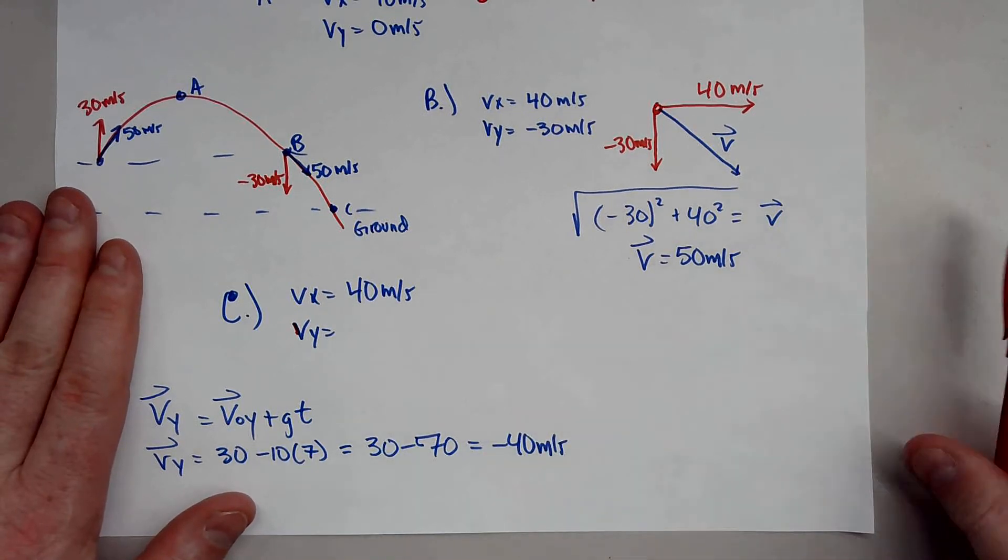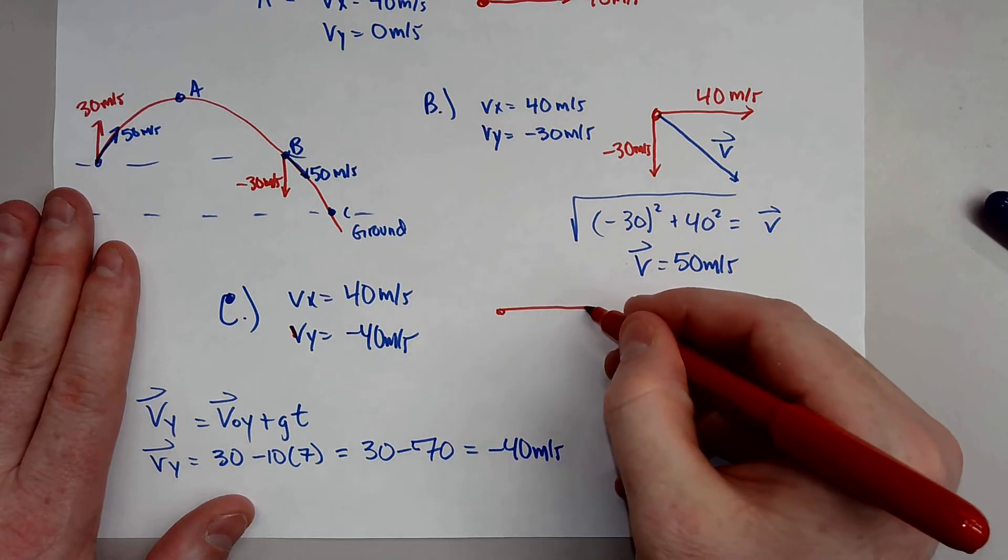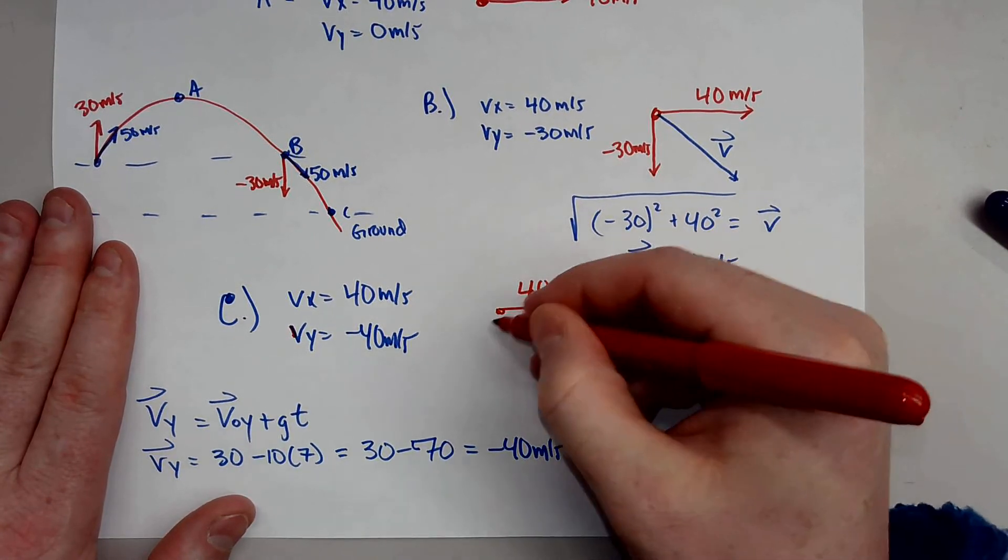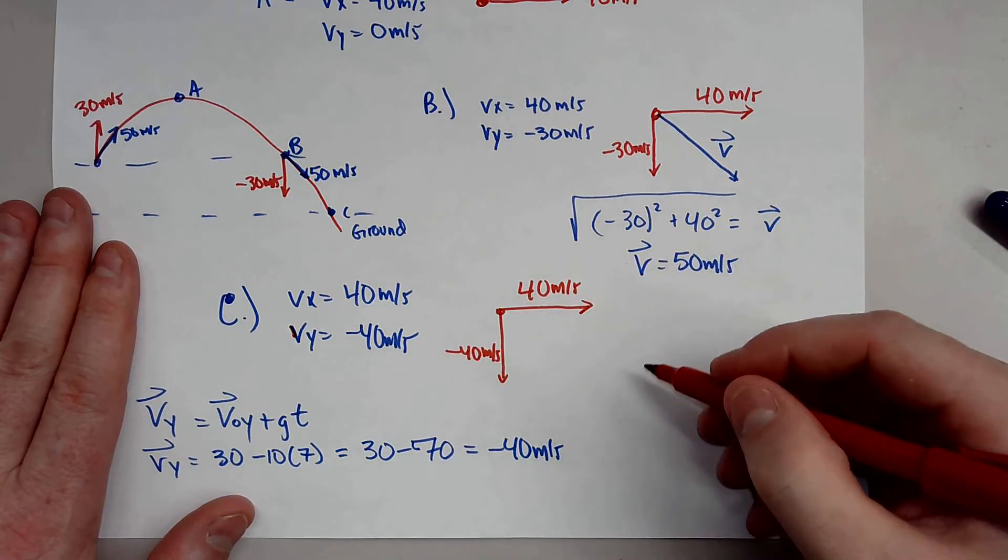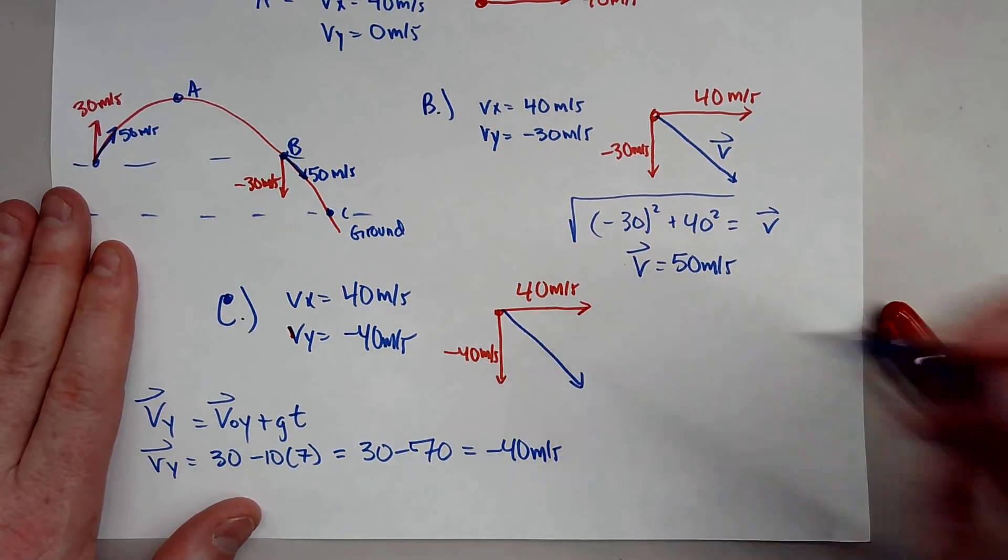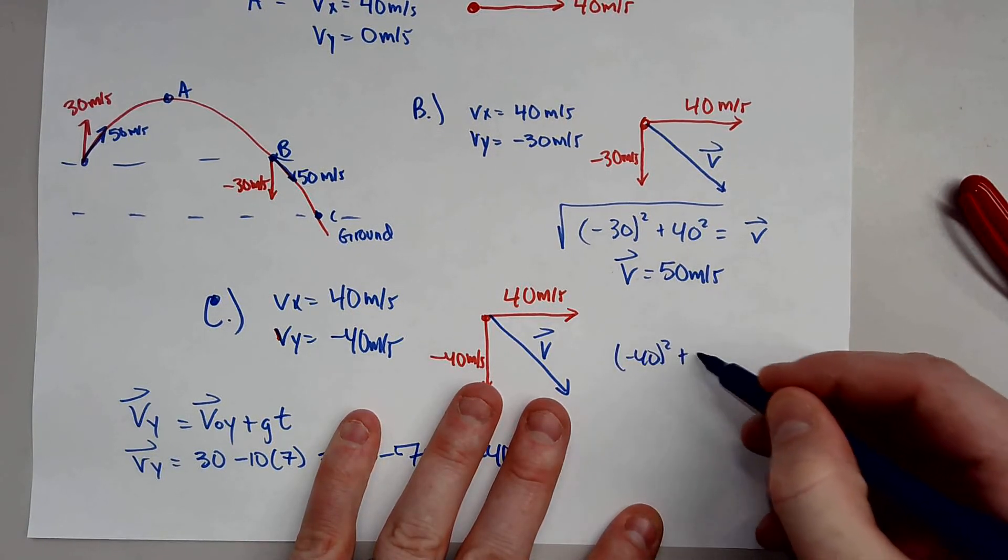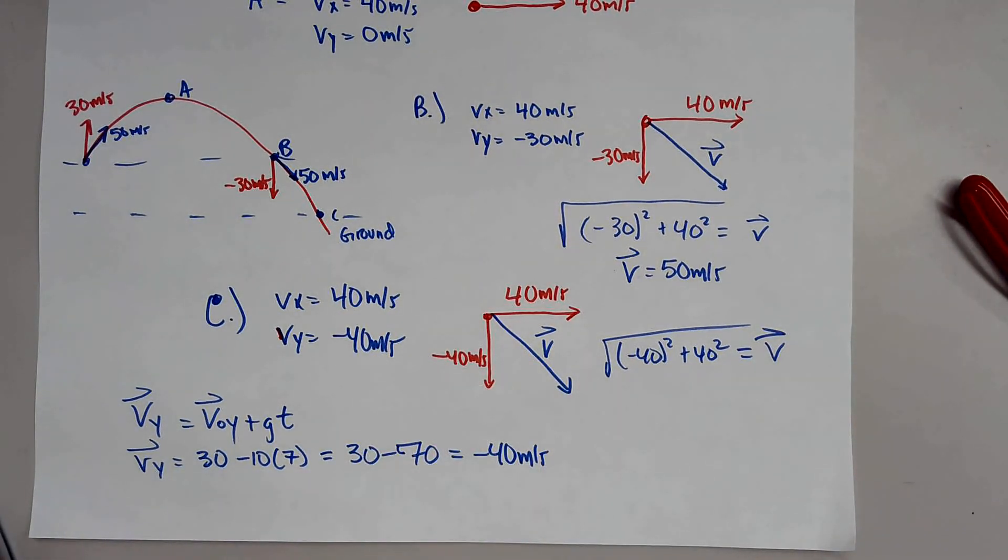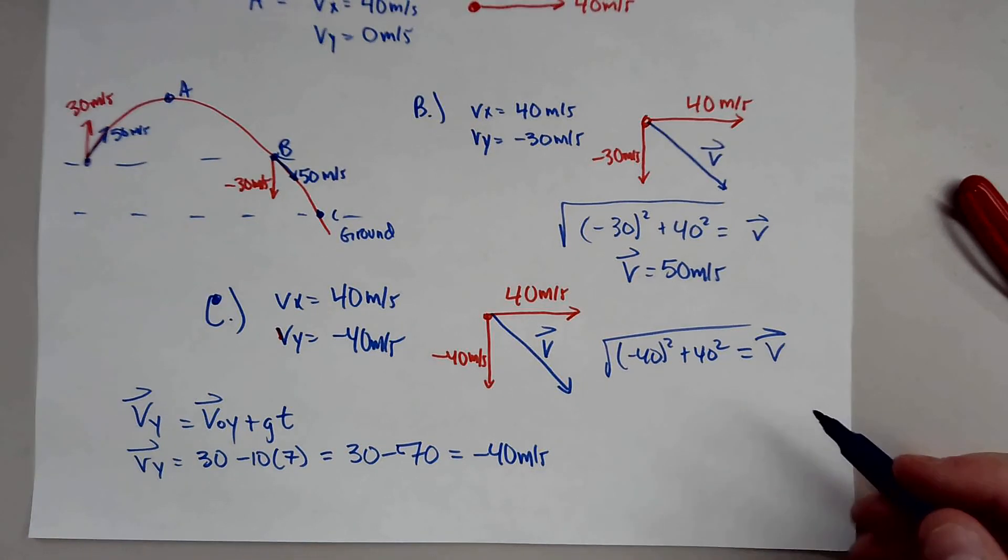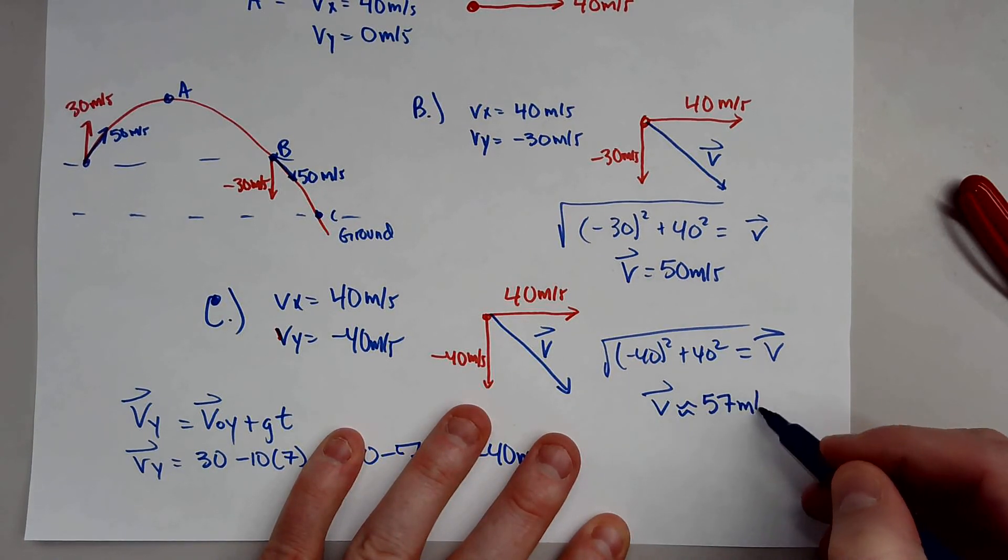So now drawing this out, we get this. So you have an x direction of 40, and negative 40 in the y. So we can solve for this speed, again, the exact same way. So negative 40 squared plus 40 squared, square root of that, will give us V. So what is that, 40 squared plus 40 squared, square root of that answer, and you get approximately 57 meters per second.